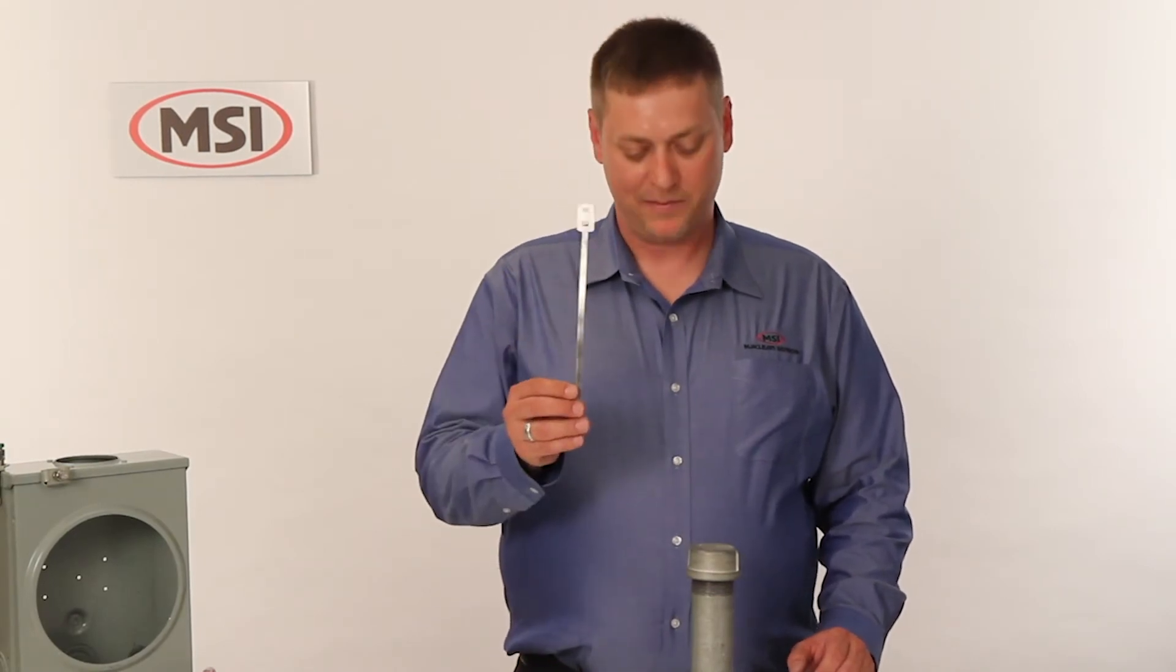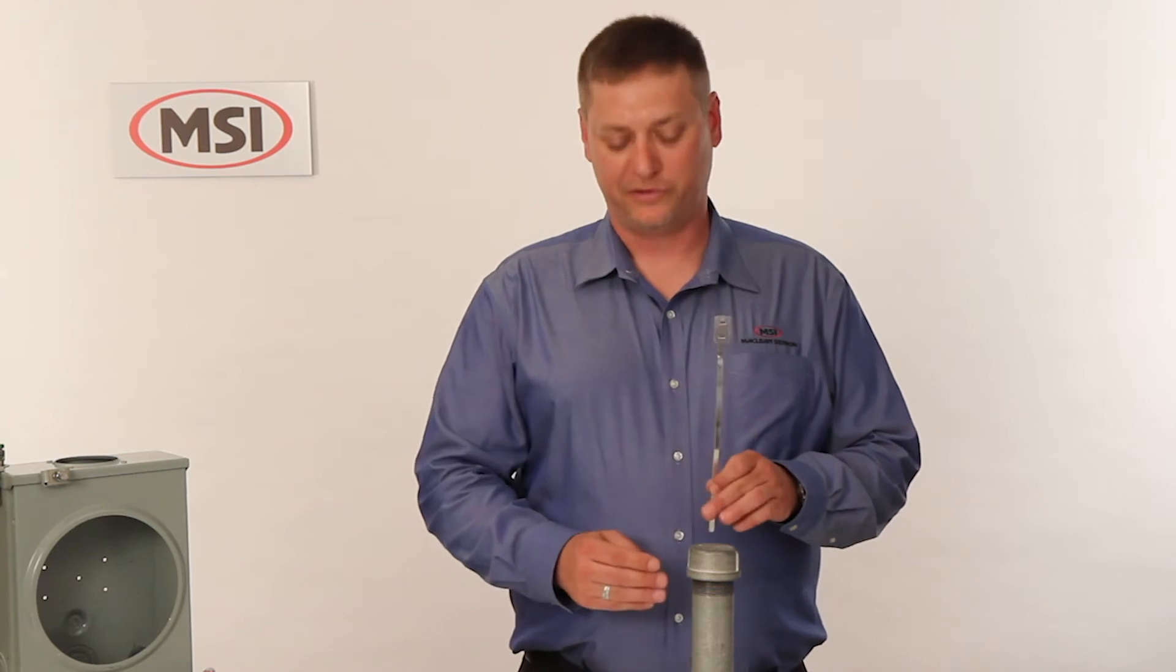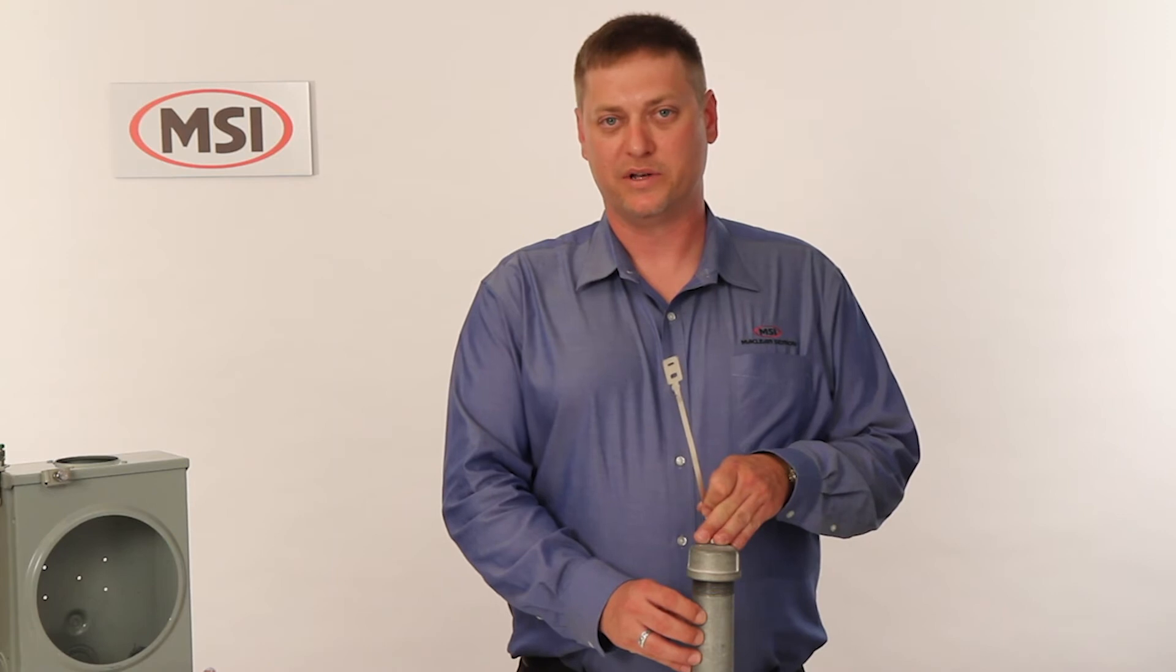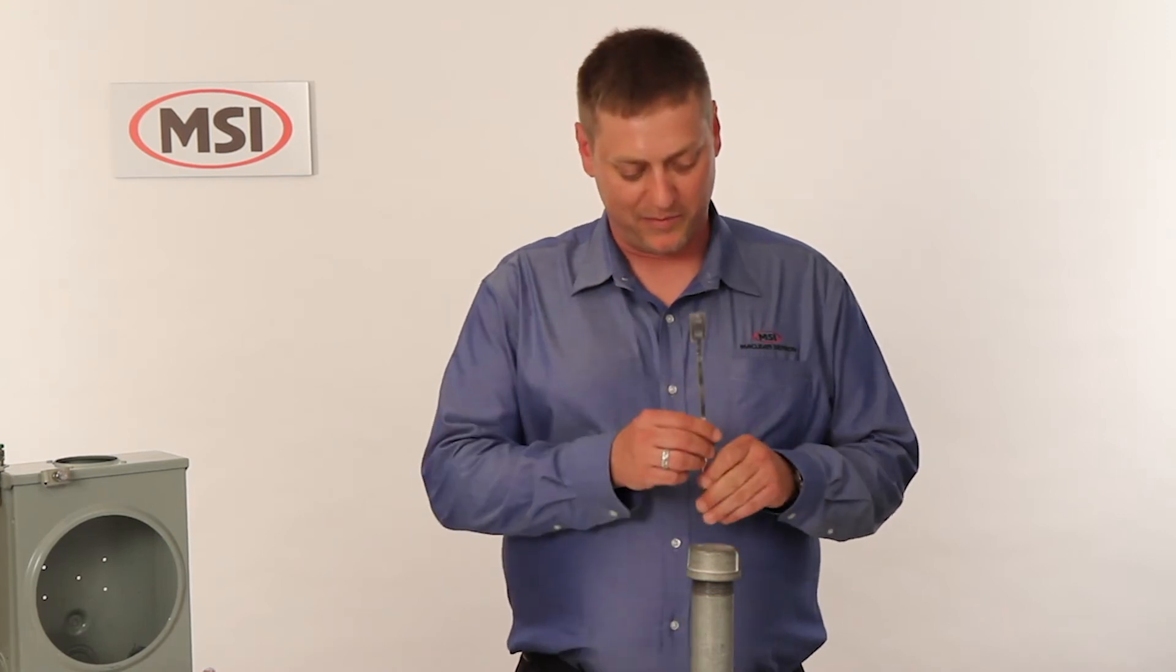The second application for the MSI aluminum cable tie is attaching the cable to metal or PVC conduit without damaging the conduit on the side of the customer's premise.